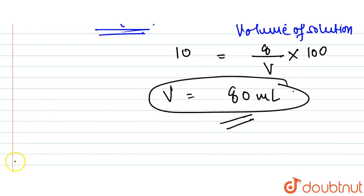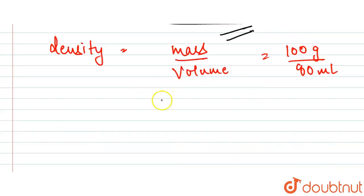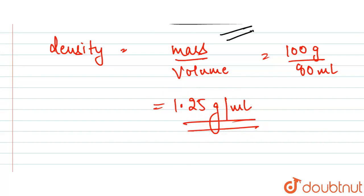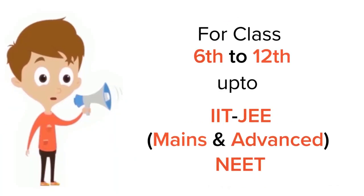Now that we have the volume as 80 milliliters, we can find the density. Density equals mass upon volume — mass is 100 grams, volume is 80 mL. So the density comes out to be 1.25 grams per milliliter. That is our required answer.